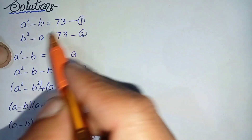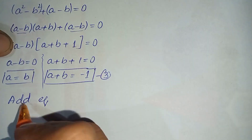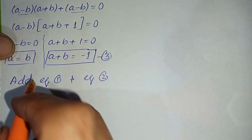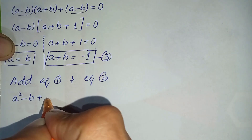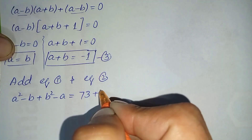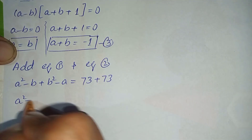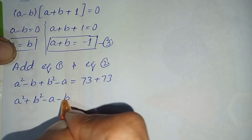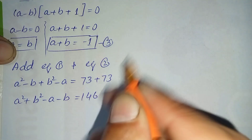Now we add equation number one and equation number two. Adding their left-hand sides: (a squared minus b) plus (b squared minus a). Both right-hand sides are 73, so the sum equals 146. Rearranging the terms gives us a squared plus b squared minus a minus b equals 146.